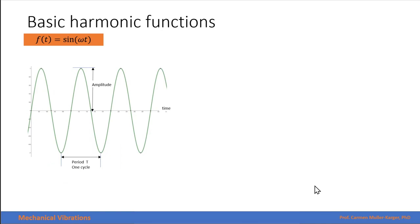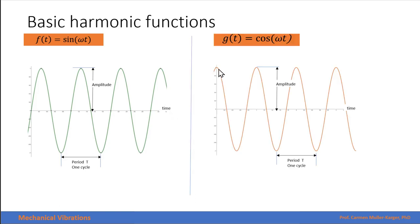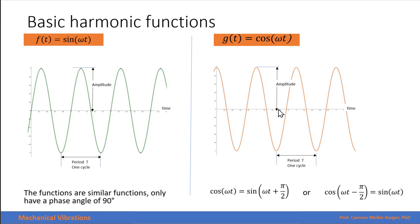The most basic harmonic functions are the sine and cosine. The sine function starts at zero, and one cycle runs from one zero crossing back to the equivalent position. The amplitude is from zero to the maximum value. The cosine function starts at 1, and a cycle can be measured from any peak to the next peak. The sine and cosine are similar functions with a phase angle of 90 degrees between them, meaning the peak of the cosine occurs 90 degrees before the peak of the sine. We can relate them by adding a phase angle of pi/2.